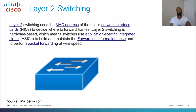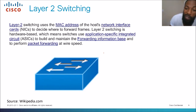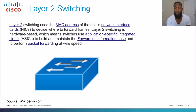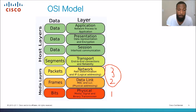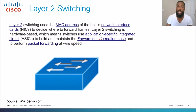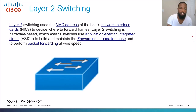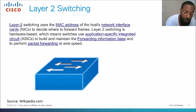The official definition of Layer 2 switching: it uses MAC addresses of host network interface cards to decide where to forward frames. Frames are like IP packets but work at Layer 2, dealing with Ethernet headers. Layer 2 switching is hardware-based — switches use ASICs (Application-Specific Integrated Circuits), chips inside the switch that build and maintain the forwarding information base to perform packet forwarding at wire speed.